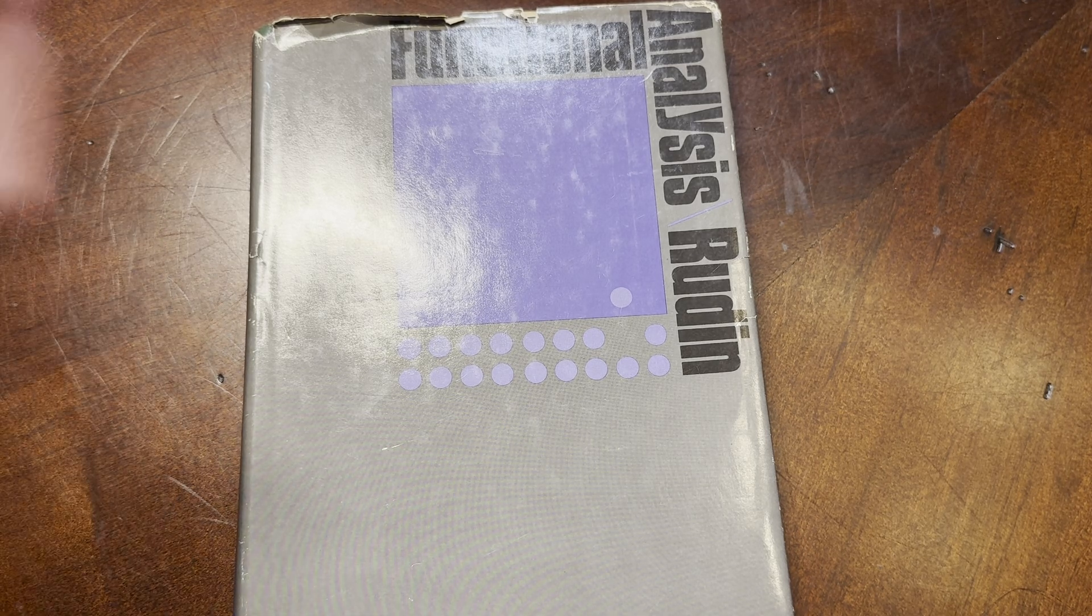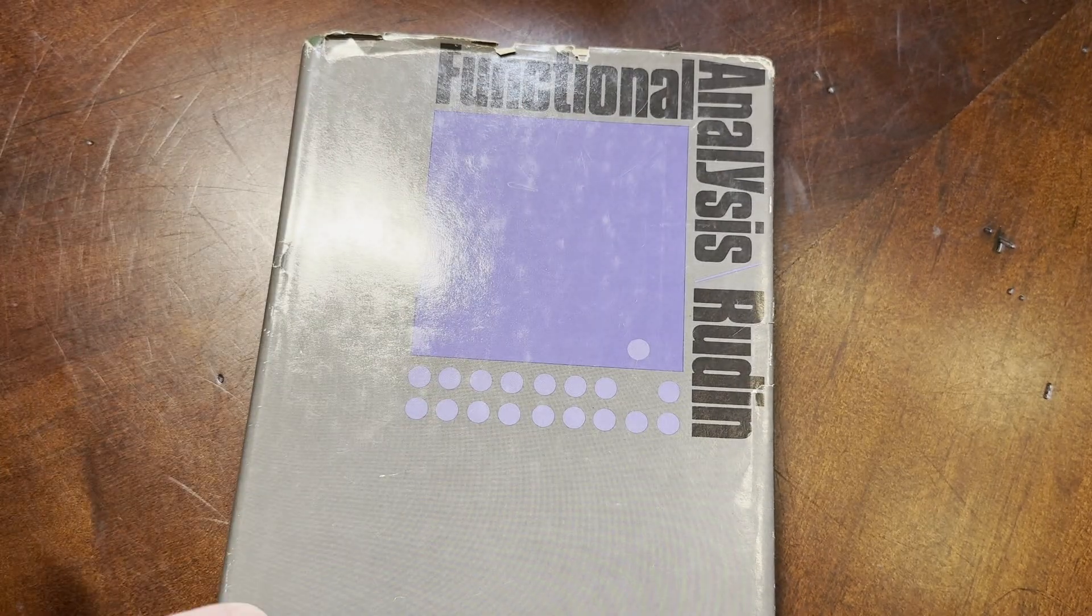The Principles of Mathematical Analysis book is called Baby Rudin. The Real and Complex Analysis book is called Papa Rudin. And I think people call this one Grandpa Rudin. I don't know if that's correct—leave a comment and let me know.